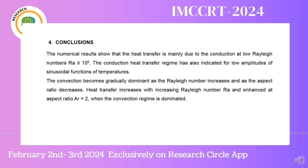In conclusion, the numerical results show that heat transfer is mainly due to conduction at low Rayleigh numbers. The conduction heat transfer regime is also indicated for low amplitudes of the sinusoidal temperature function. Convection becomes gradually dominant as the Rayleigh number increases and as the aspect ratio decreases. Heat transfer increases with increasing Rayleigh number and is enhanced at an aspect ratio equal to 2 when the convection regime is dominant.